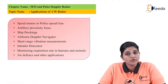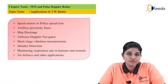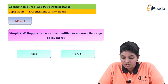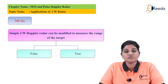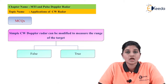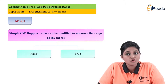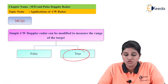Now we are going to continue the topic with some MCQs. The first question is: can the simple continuous Doppler radar be modified to measure the range of the target? The answer is in the form of true or false, and the answer is true. We can modify the continuous wave radar in order to measure the range of the target.